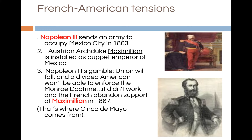Emperor Napoleon III of France dispatched a French army to occupy Mexico City in 1863 and installed Maximilian as emperor of Mexico. The actions of Napoleon were in direct violation of the Monroe Doctrine. Napoleon was counting on the Union not retaliating due to its weakness. When the Civil War ended in 1865, Napoleon was forced to abandon Maximilian and Mexico.